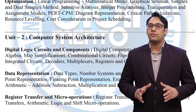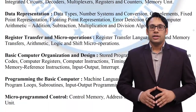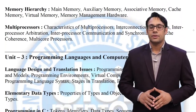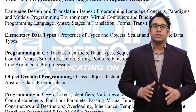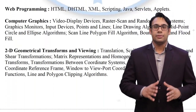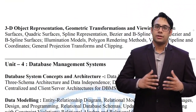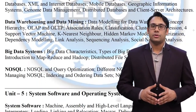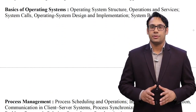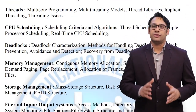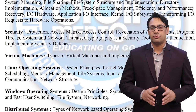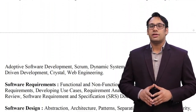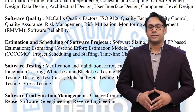In the UGC NET examination there are a total of 10 units, and across all those 10 units there are 23 subjects being asked. Completing all 23 subjects sometimes becomes very difficult because you have only 5 to 6 months for preparation — and including revision time, roughly you have about 4 months. In those 4 months it is very difficult to cover all 23 subjects.